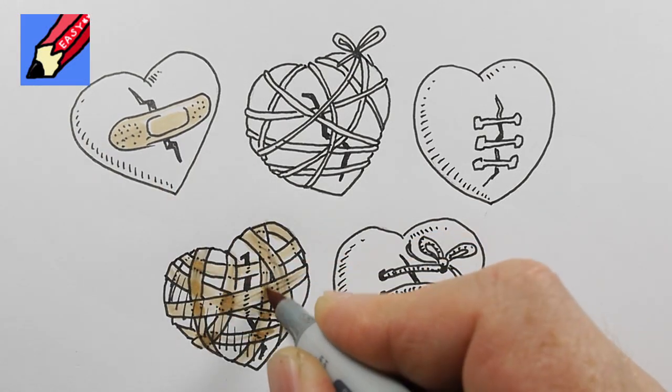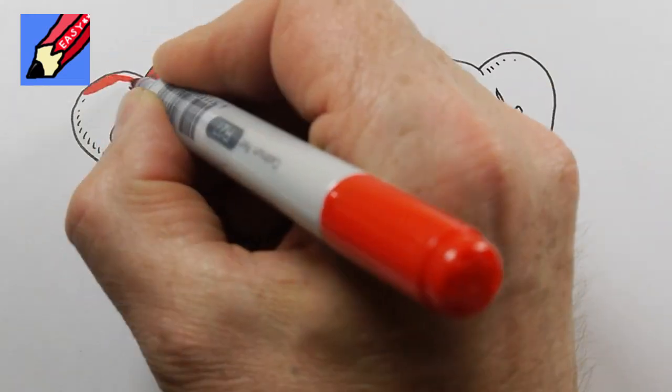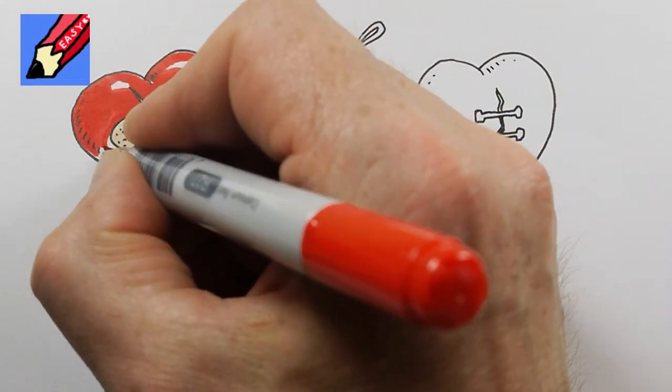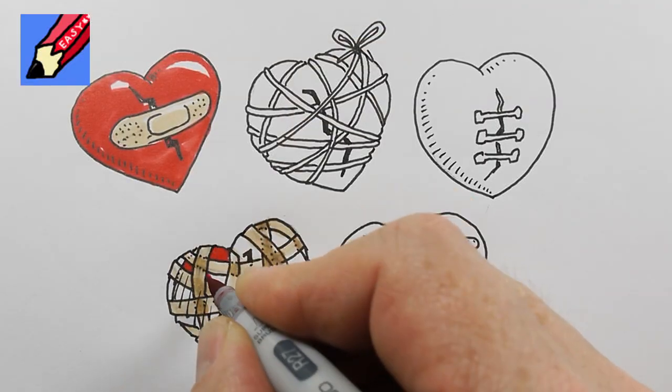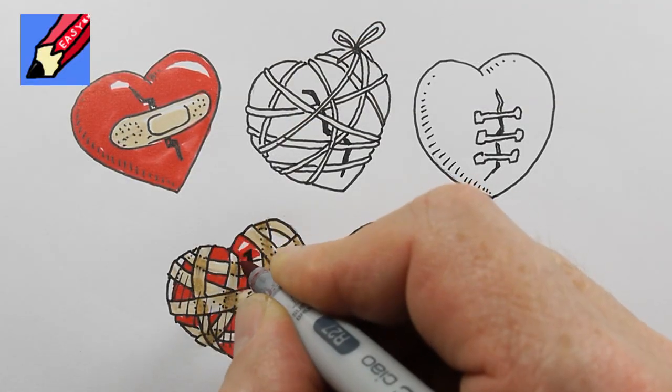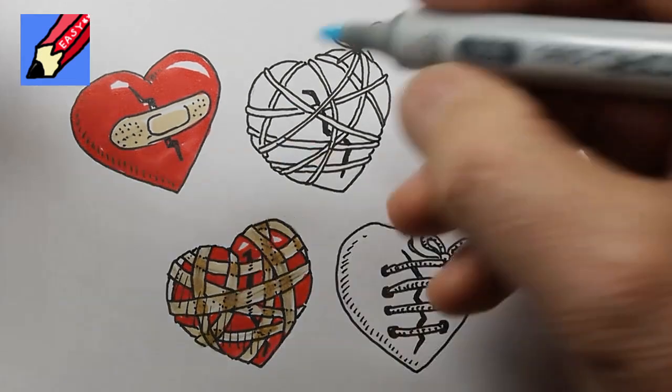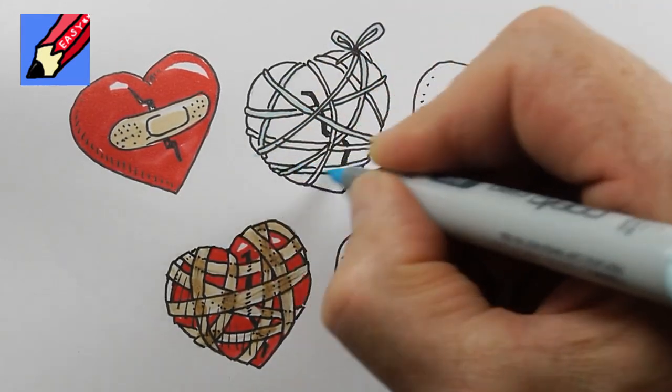And with these sellotape things, where they cross over, making them just slightly darker. With the hearts, leave a little bit of light there to make them shine. Doing the same on that one.